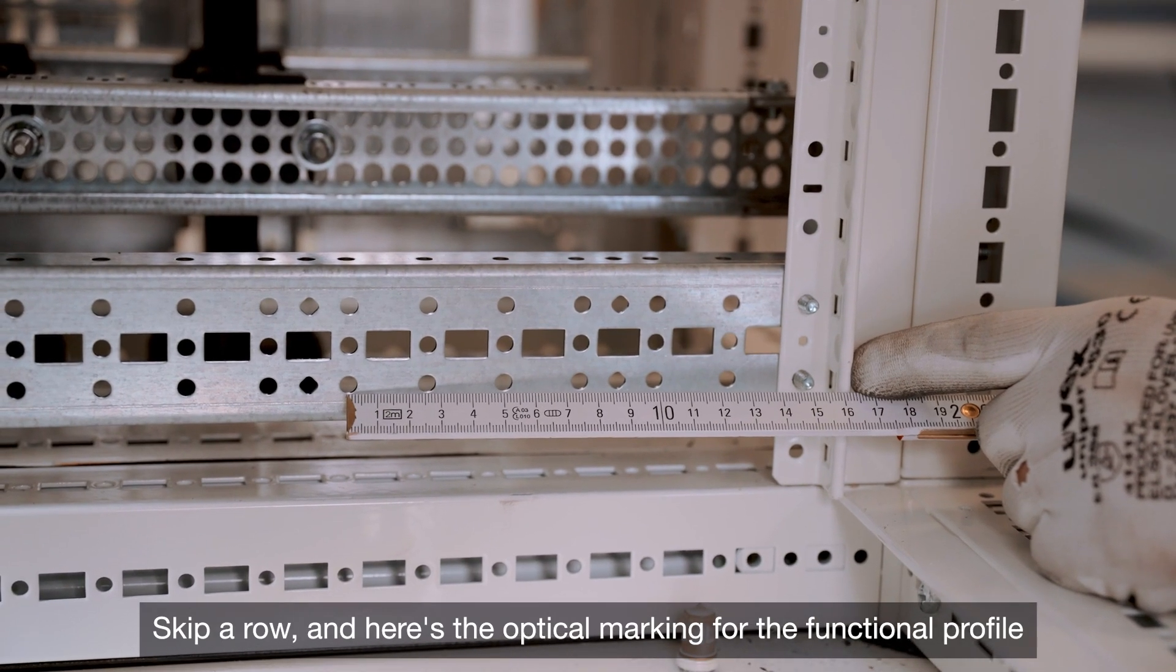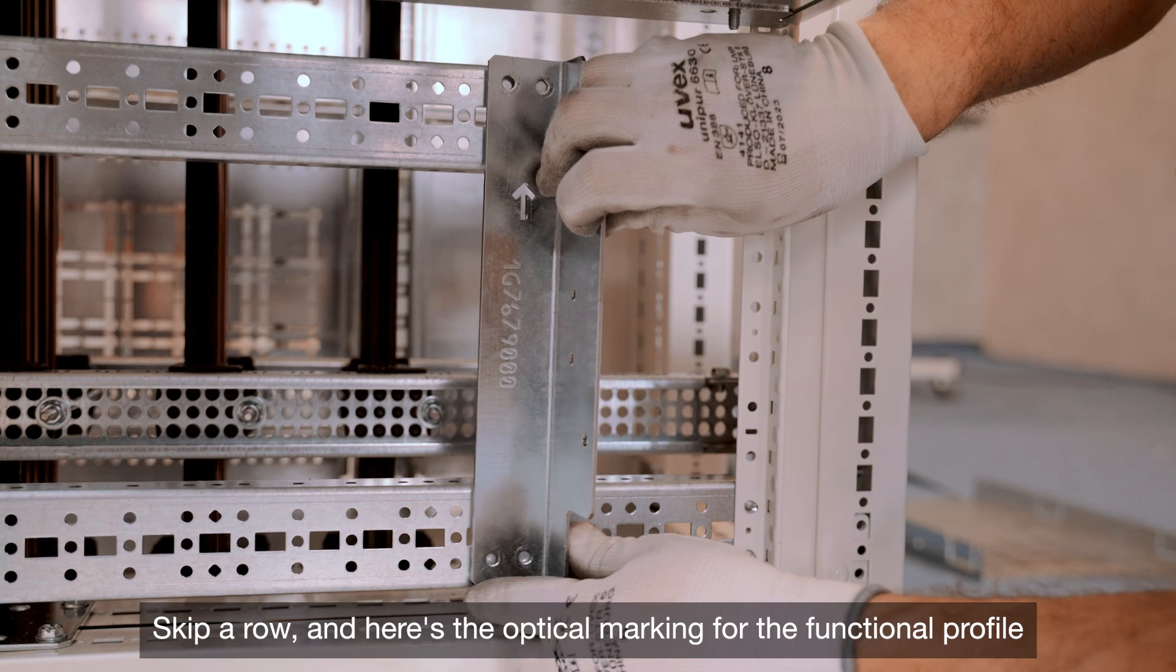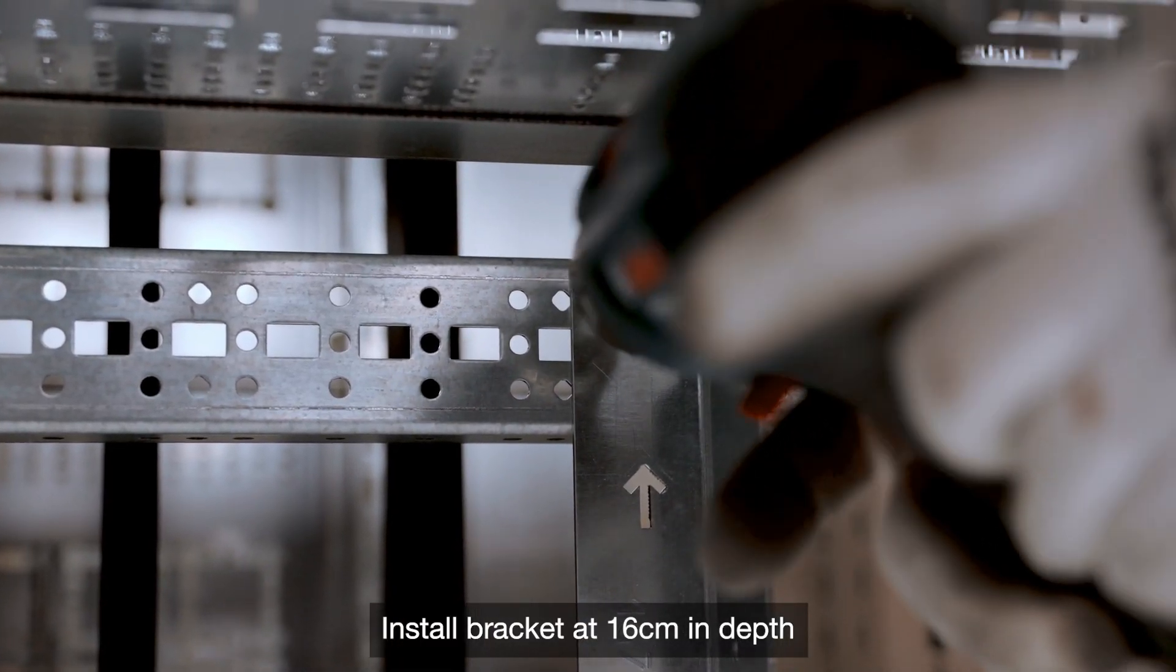Skip a row, and here's the optical marking for the functional profile. Install bracket at 16cm in depth.